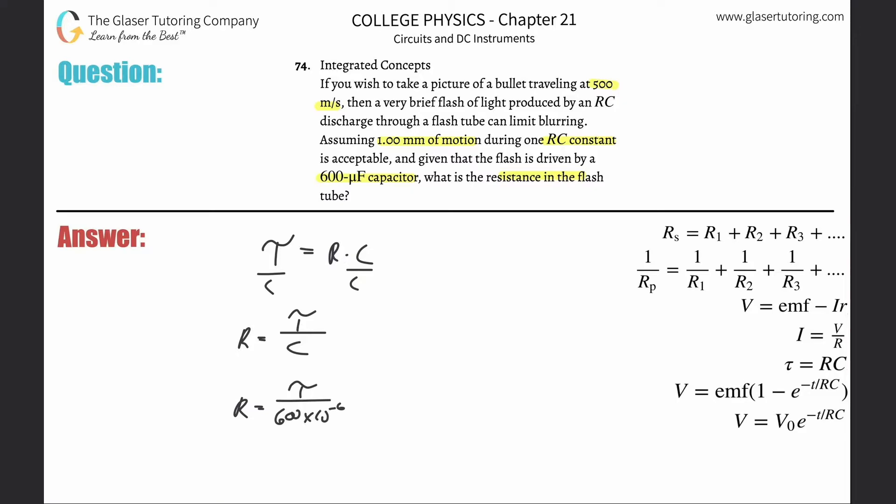Now my attention totally turns. Instead of thinking about how do I calculate resistance, I now think about how do I calculate time constant, or what is the time constant? Well, here they said that you're only allowed one millimeter of motion, right? So pretend that the motion you're snapping the picture of is this one millimeter. You got this bullet that is traveling at 500 meters per second. So every single second it's covering 500 meters, but you're only allowed to capture it during a motion period of one millimeter.